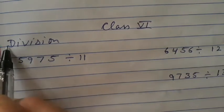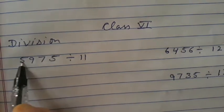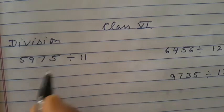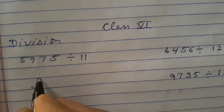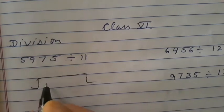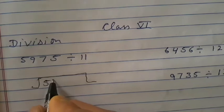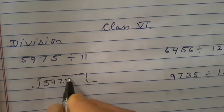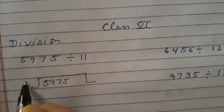Good morning students. Today we will do questions based on division. The first question is 5,975 divided by 11. Now, 5,975 we write it inside and 11 outside.